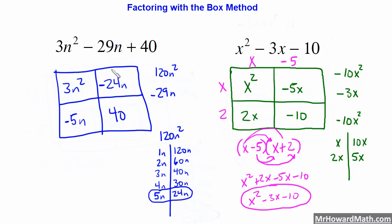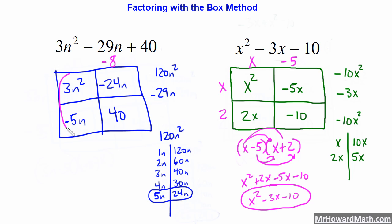Now we take the greatest common factor from this column. We have a negative here, so we must have a negative in our GCF. A negative 8 is the greatest common factor here, so we'll take that out. Moving to this column: 3 and 5 don't share a GCF, but N squared and N do — so that's just an N. So one of our factors is identified: N minus 8.